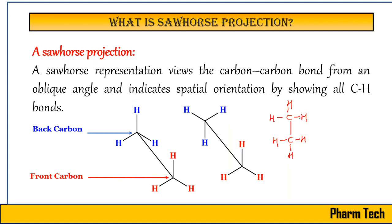To draw this molecule in sawhorse projection, you draw one slant line, then consider the carbon on the back side and front side. When you are viewing across the C-C bond, the nearer one becomes your front carbon. In all sawhorse projections, this is considered the front carbon, and the other is the back side carbon. On each carbon there are three hydrogens, and in this way you can draw the sawhorse projection.